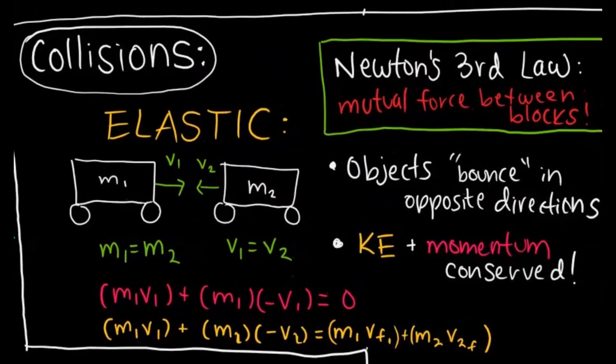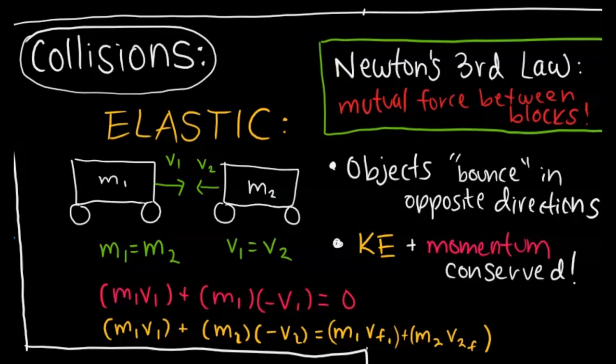Now we want to talk about collisions. Collisions are built on the foundation of Newton's third law. There's a mutual force that each block is going to be experiencing when they collide. The first type of collision are elastic collisions. Elastic collisions bounce in opposite directions, and elastic collisions will conserve both kinetic energy and momentum.